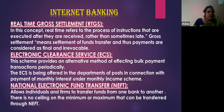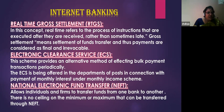Electronic Clearance Service (ECS) is a mode of payment whereby institutions make bulk payments periodically. This scheme provides an alternative method of effecting bulk payment transactions periodically. ECS is used in connection with payment of monthly interest under Monthly Income Scheme; depositors have the facility of getting Monthly Income Scheme interest automatically transferred and credited into their savings bank account on the due date at their own banks.